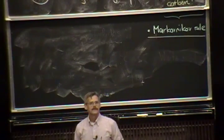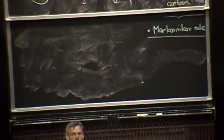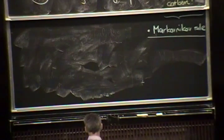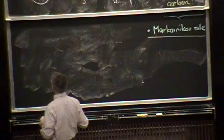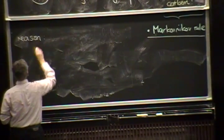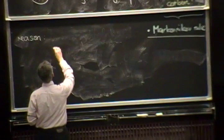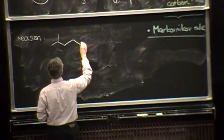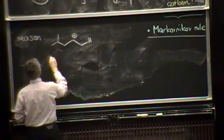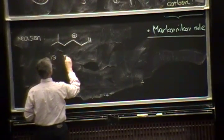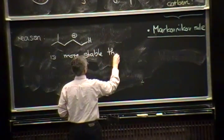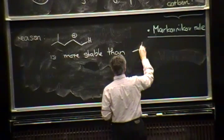Which explains the regioselectivity, the regiochemistry of an addition across an alkyne that's not symmetrical. And again, the reason for that is, according to the Markovnikov rule, it's very simple. If you look at the two possibilities, the secondary carbocation is simply more stable than the primary carbocation.